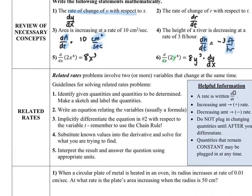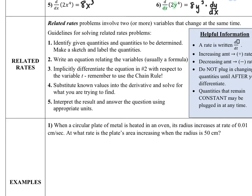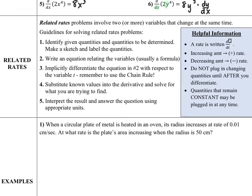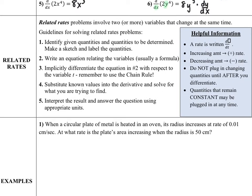In the next section, I have the steps for solving a related rates problem — it won't really make much sense until we do one, so we'll follow the steps as we work through the first example. A helpful note: a rate is just a derivative, so d-whatever over dt. A rate measures how something changes over time, so there will always be a dt on the bottom. An increasing amount means a positive rate; a decreasing amount means a negative rate. You're not allowed to plug your values in until after you differentiate, unless you have a constant that remains constant throughout the entire problem.